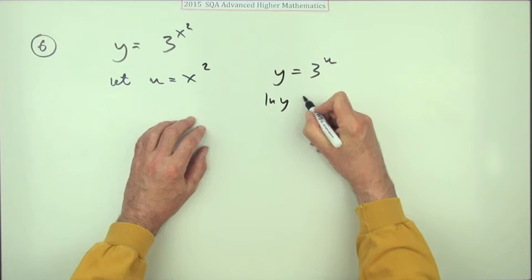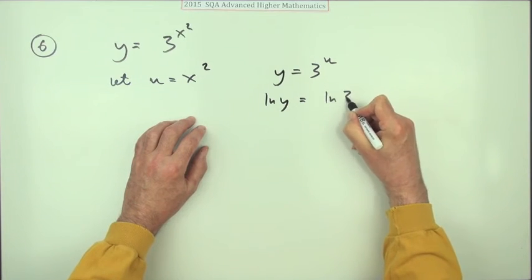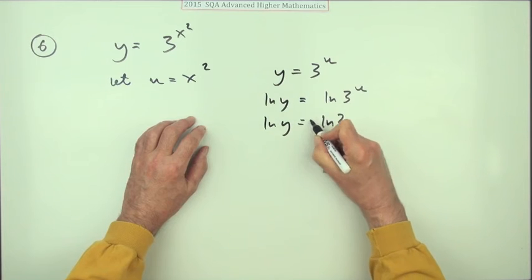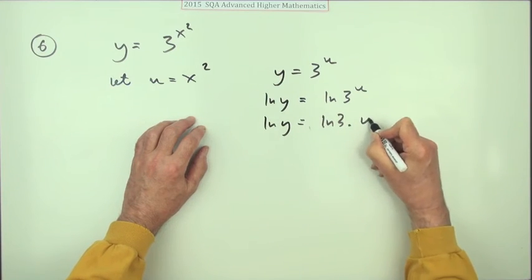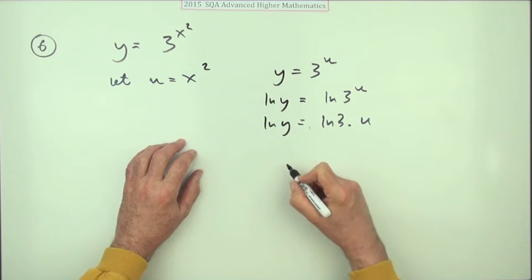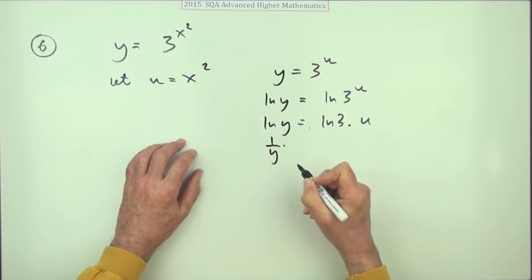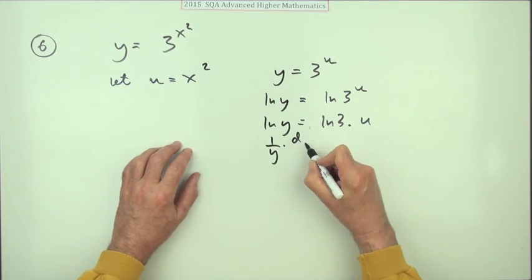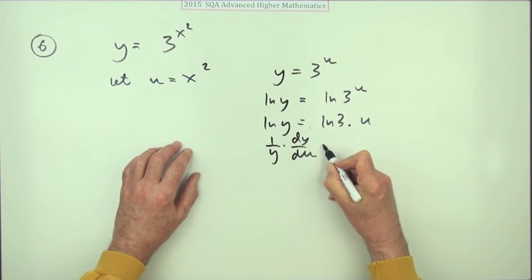So ln y would be ln 3 to the u, so ln y would be ln 3 multiplied by u. So I'll just pop it in this side because that's just a constant. And then differentiating that would be one upon y.